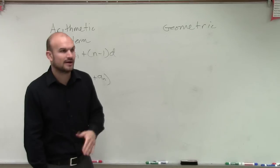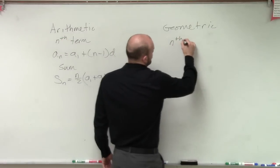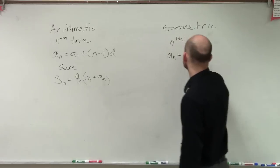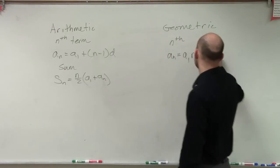So, geometric, the exact same kind of parallels. We have a formula for the nth term. The formula for the nth term is a of n equals a sub 1 times your r to the n minus 1.